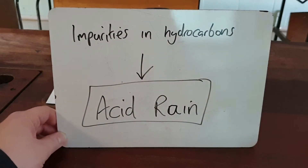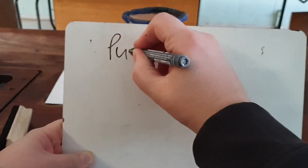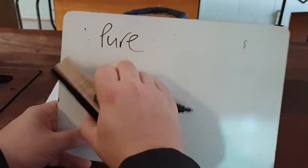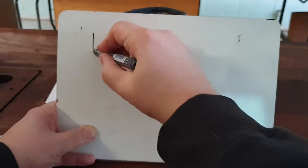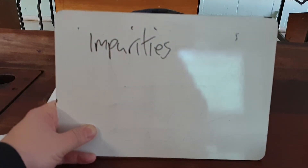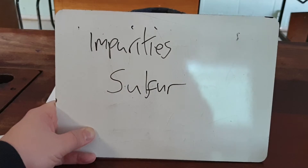A quick video on how impurities in hydrocarbons can lead to acid rain. If something is a pure substance, it means it only contains one type of substance — pure water only contains water. If you've got something that is impure, it has other things in it. Unfortunately, a lot of hydrocarbons contain sulfur as an impurity.